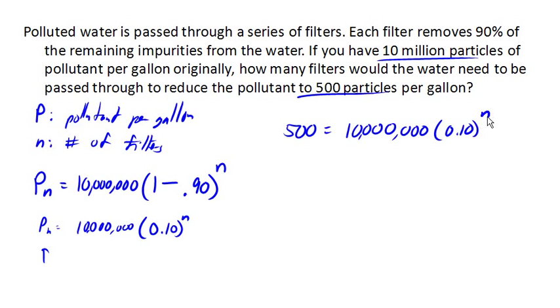So now, in order to start solving this for N, the first thing we need to do is get that exponential part by itself. So we're going to divide both sides of the equation by 10 million. So on the right, I've got 0.10 to the N. Now if we can avoid decimals, great. But if not...